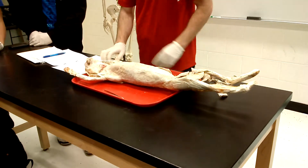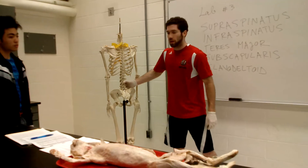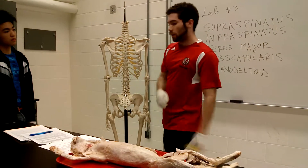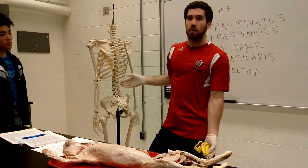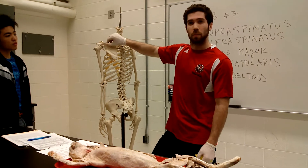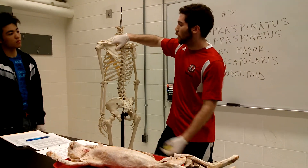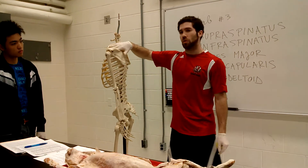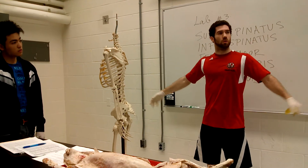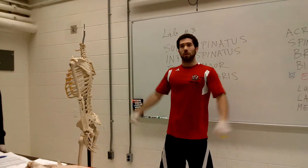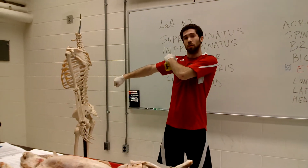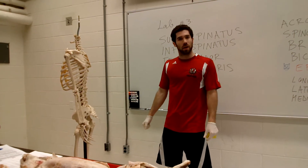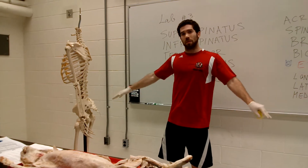On the skeleton to show origin and insertion: supraspinatus originates from the supraspinous fossa — above the spinous process of the scapula — and inserts on the greater tubercle of the humerus. It stabilizes the shoulder joint and initiates abduction. When you do lateral raises, supraspinatus kicks off that motion in roughly the first 30–45 degrees before other muscles take over.